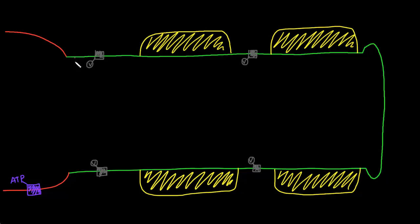One of the principles of a capacitor like the cell membrane is that the closer the charges are to each other, the more charges can be stored on both sides of the capacitor. The way I like to think about that is that at the nodes of Ranvier, there's only the normal thickness of the cell membrane, which is relatively thin. So an anion in the layer against the inside of the membrane is strongly attracted to a cation in the layer on the outside of the membrane.